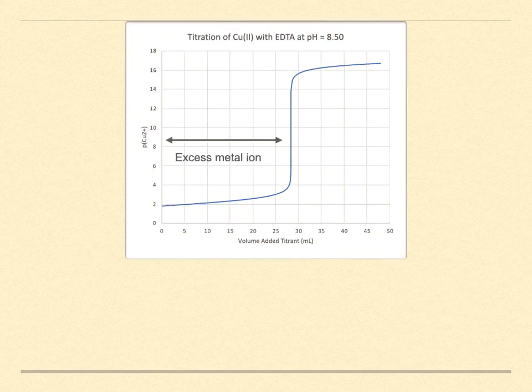Before the equivalence point, the concentration of the metal ion is in excess. Because we choose pH values to ensure that the conditional formation constant is large, we can assume that the EDTA has removed some of the metal with a 1-to-1 stoichiometry. The remaining metal is diluted by the added titrant volume to find the metal ion concentration.